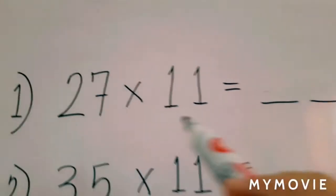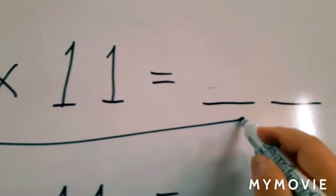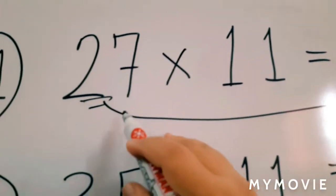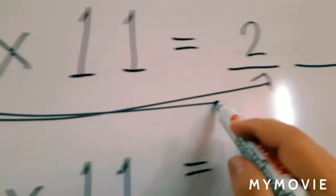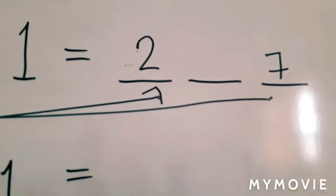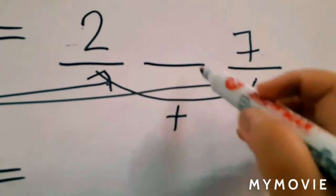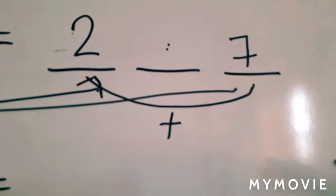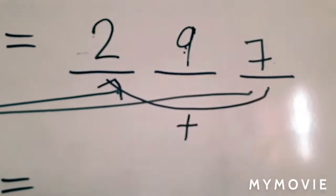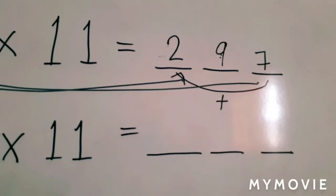27 times 11. We simply have to copy 2 and put it at the first digit of our answer. Next, copy 7 and place it at the last digit of our answer. Next, 2 plus 7, we simply have to add to find the middle number. 2 plus 7 is 9. So the answer here is 297. 27 times 11 is 297.